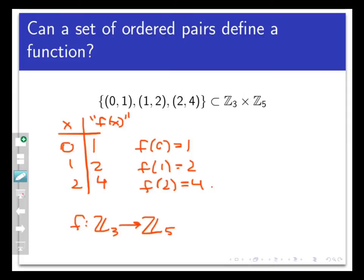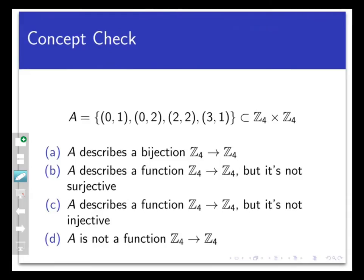So we can start with a set of ordered pairs and possibly come up with a function from those pairs. I say possibly because not all sets of ordered pairs may yield functions like it did above. So I'd like you to think about this idea yourself as part of a concept check. Let's suppose that A is the following subset of Z4 across Z4. Then what could you say about A? Pause the video and especially think about why your answer is right and the others are wrong.